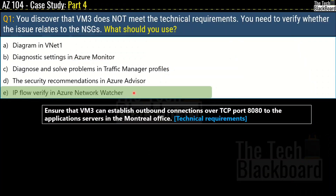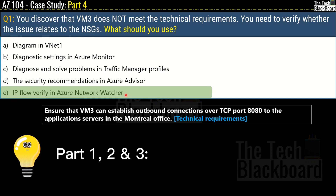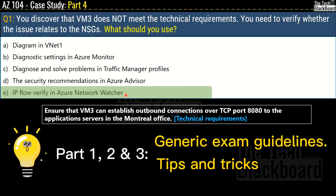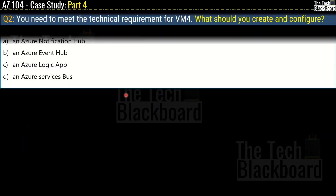So option E, IP flow verify in Azure Network Watcher, is the answer to question 1. Before moving ahead, let me remind you that in the earlier three parts I shared generic guidelines from Microsoft on case studies, along with tips and tricks to help you secure higher grades in the AZ-104 certification. Links for all earlier parts are in the description box. Now let's move ahead to question 2.